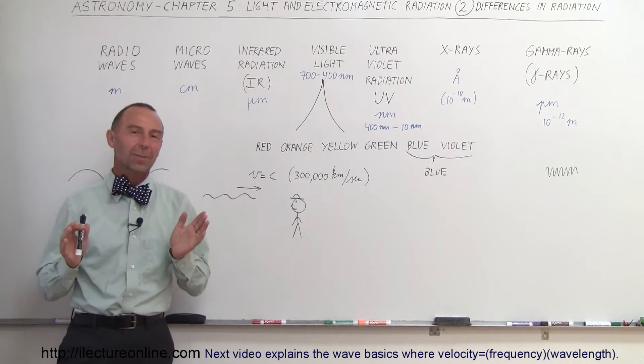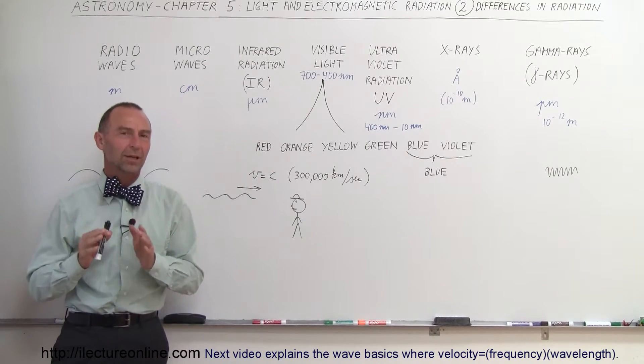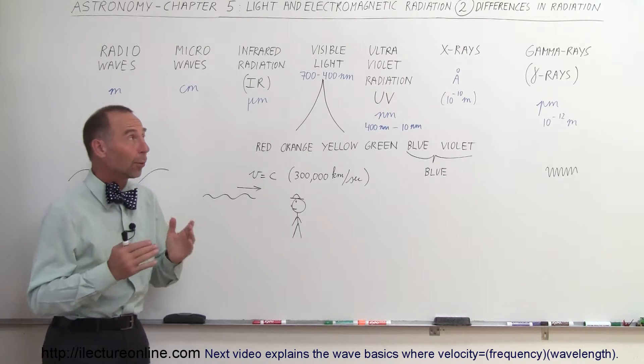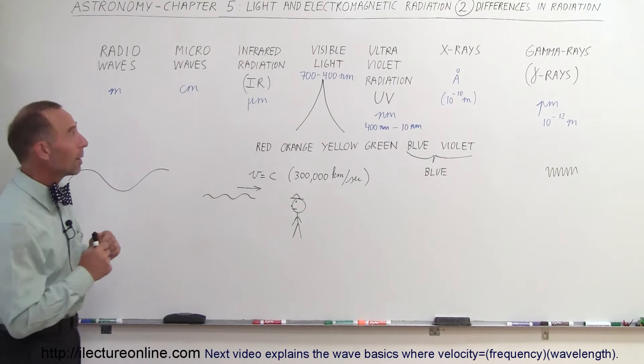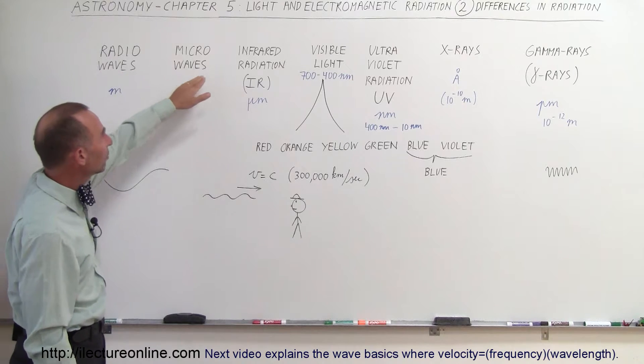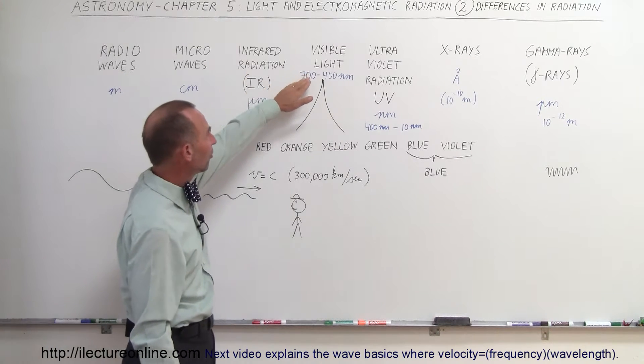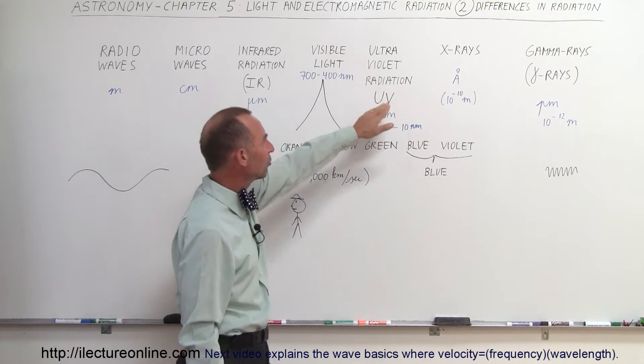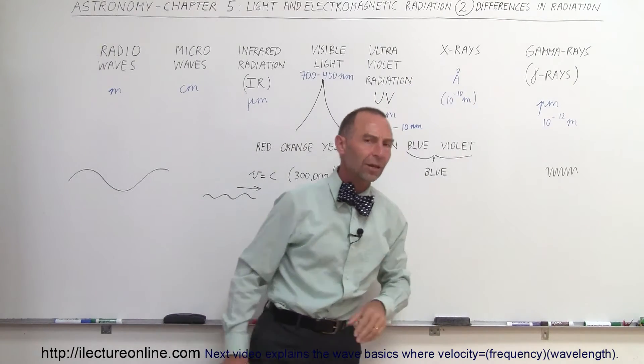Welcome to ElectronLine and now let's talk about the different types of electromagnetic radiation and what are the differences between them. Remember that we had radio waves, then microwaves, infrared radiation, visible light, ultraviolet radiation, X-rays and gamma rays.